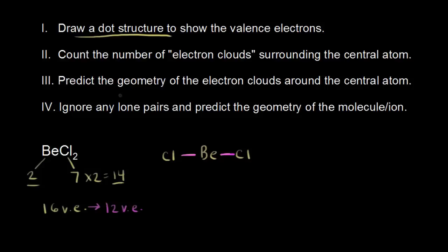We're going to put those leftover electrons on our terminal atoms, which are our chlorines, and chlorine is going to follow the octet rule. Each chlorine is already surrounded by 2 valence electrons, so each chlorine needs 6 more. We put 6 more valence electrons on each chlorine, representing 12 more electrons, bringing us down to 0 remaining valence electrons. This dot structure now has all of our electrons in it.